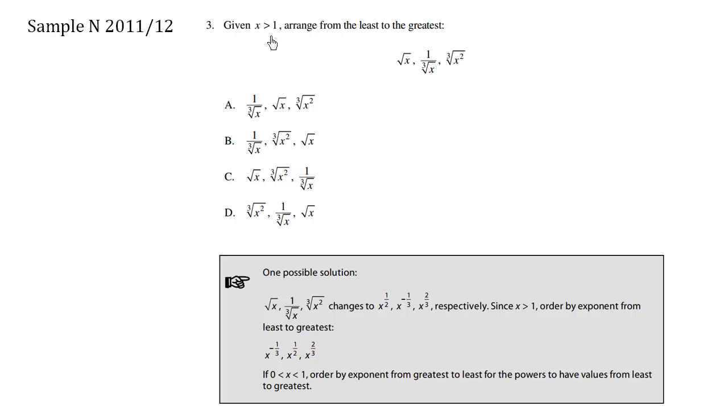Given x is greater than 1, arrange from least to greatest. Here we have a bunch of x's and radical signs, and even we have reciprocals.